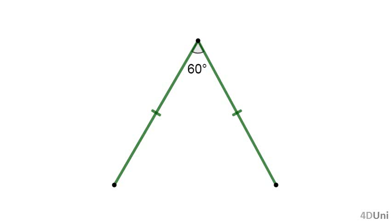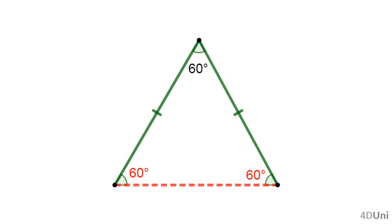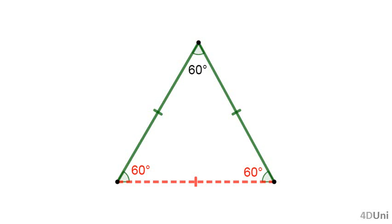Before we continue, remember that if we have two segments with a common end and with the same length, the triangle that is formed joining the other two ends with a straight line segment is an equilateral triangle. Why? Because the measures of the other two angles are both 60 degrees — they are opposite to the sides with equal length and they both should add up to 120 degrees. In a triangle, if the measures of the three interior angles are equal, its three sides should have the same length.